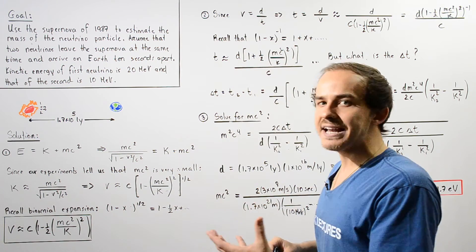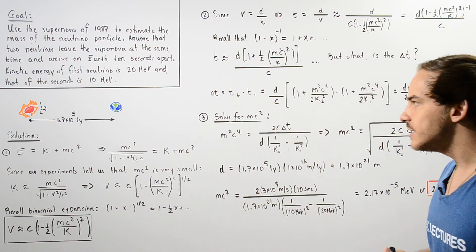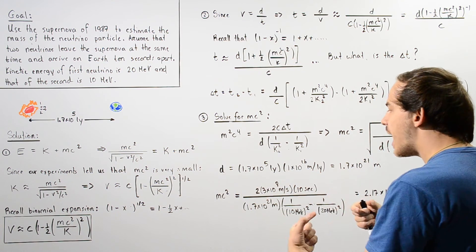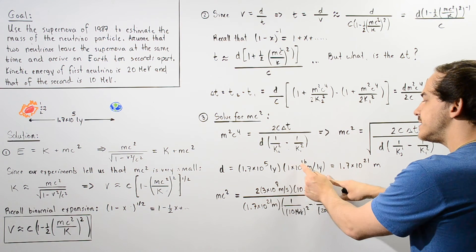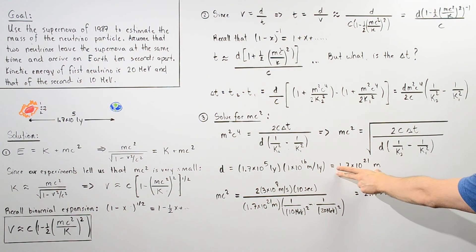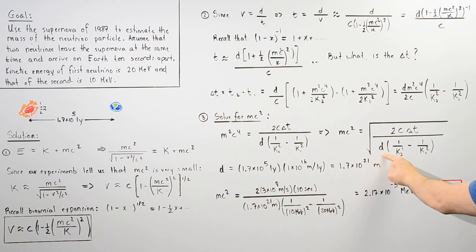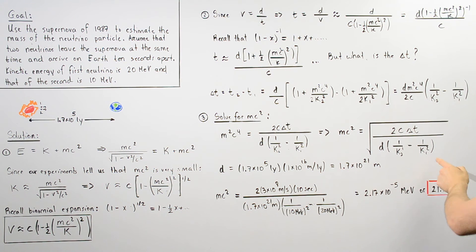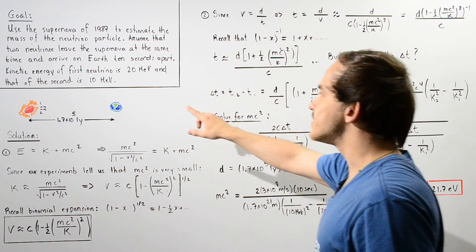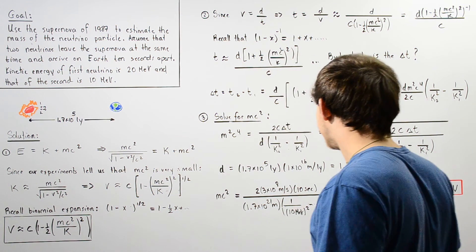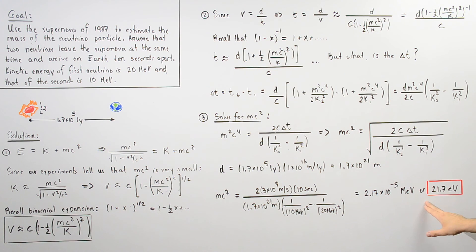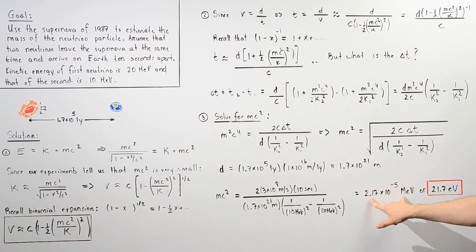The distance is given in light years, but we need meters. We multiply by 1 times 10 to the 16 meters per light year to convert the distance to meters. Plugging in the distance, the speed of light, delta-t of 10 seconds, K₂ equals 10 mega electron volts, and K₁ equals 20 mega electron volts into the equation, we calculate the rest mass energy mc² in mega electron volts.